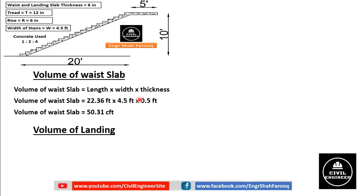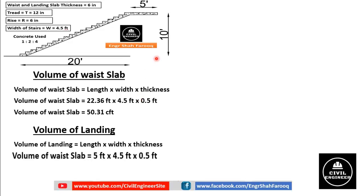Now we will determine the volume of the landing. Volume of landing equals length of landing multiplied by its width multiplied by its thickness. Length is 5 feet, width is 4.5 feet, and thickness is 6 inches or 0.5 feet. After calculation, the volume of landing is 11.25 cubic feet.